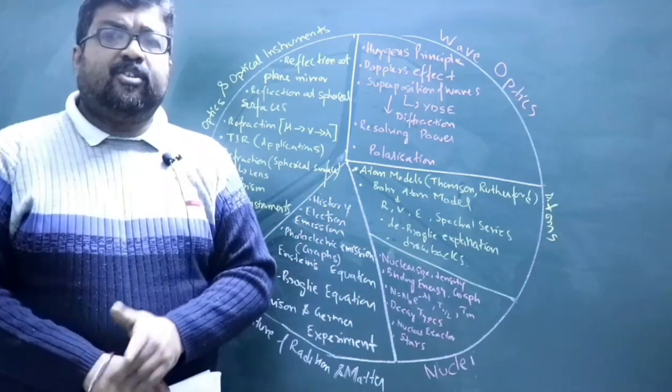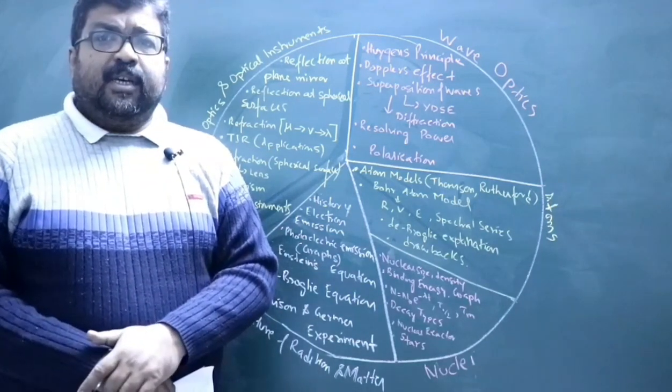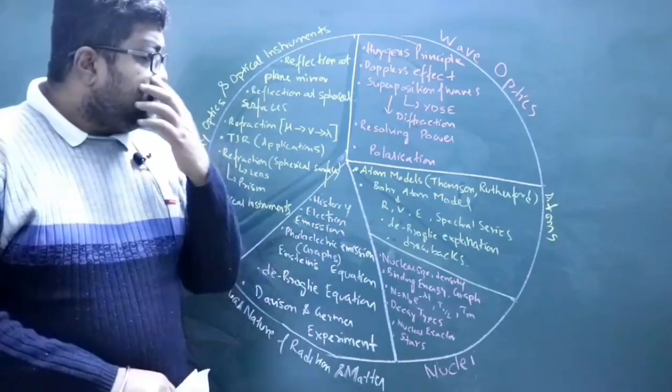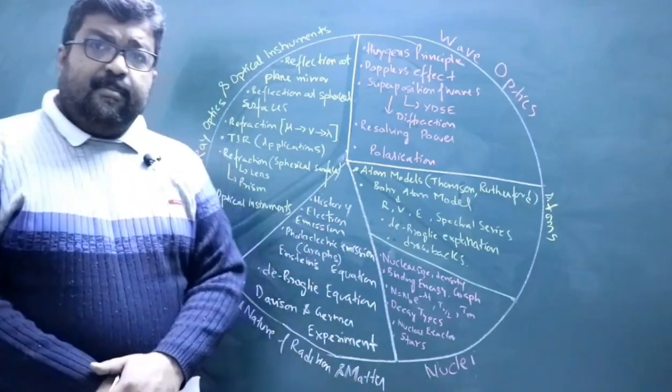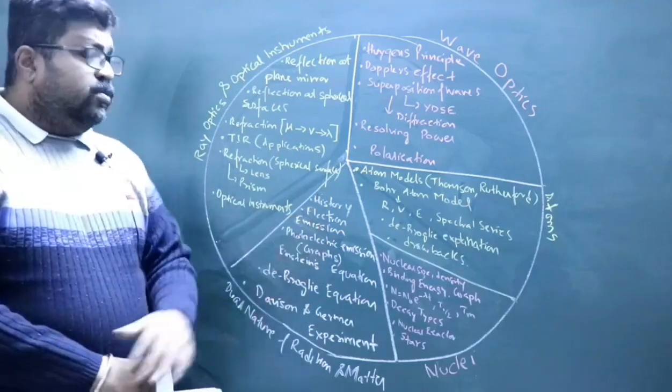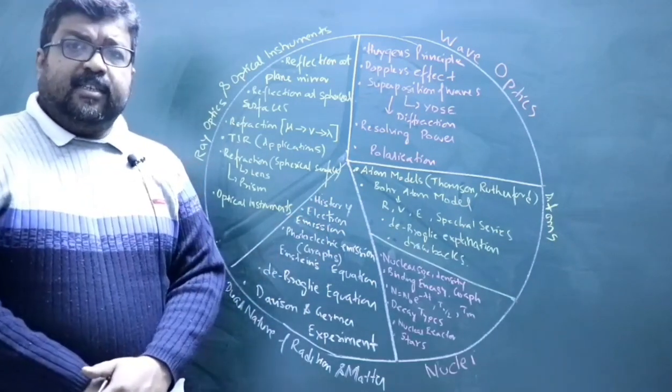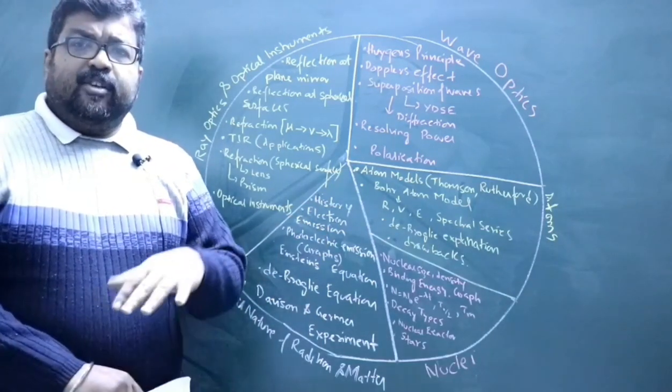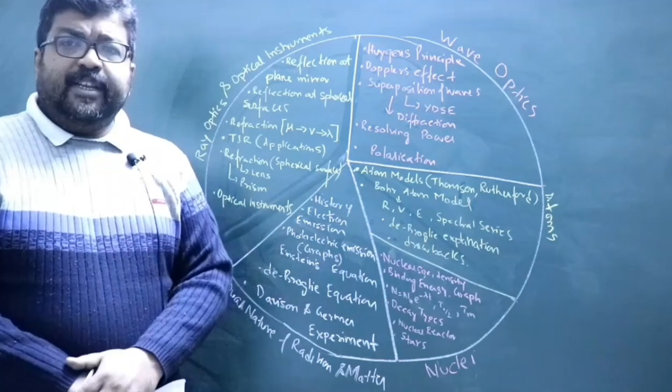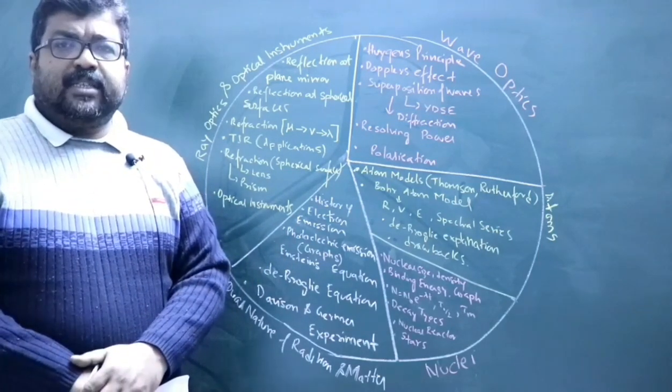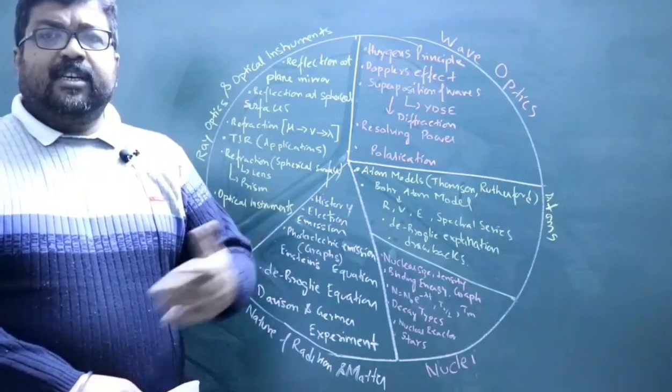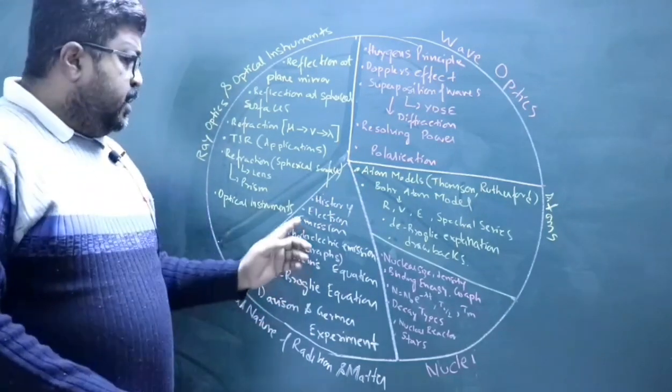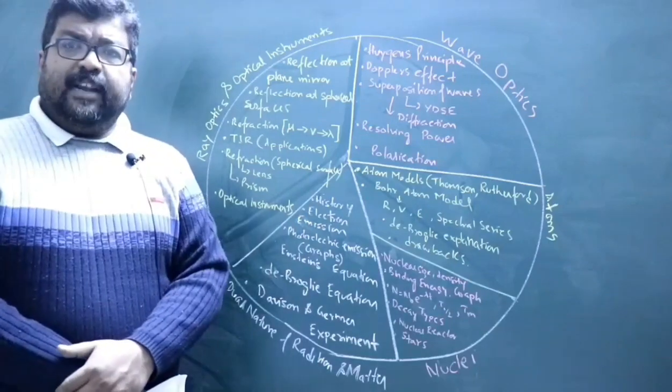Then coming to the topic dual nature of radiation and matter, you must go through the historical facts related to observations made by particular scientists. There will be questions asked like what observations were made by particular scientists - they will name the scientists and ask the observations made by them. Then you have the various methods of electron emission.